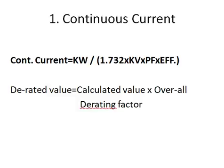The derated value of the motor feeder equals the calculated continuous current rating multiplied by the overall derating factor. We then need to check with the cable manufacturer catalog for preliminary selection of the cable size and the number of runs. This completes step one.